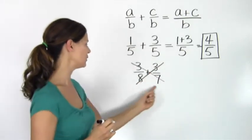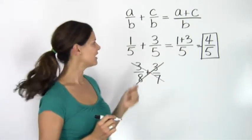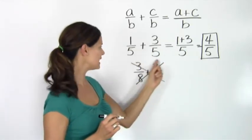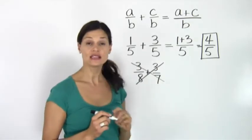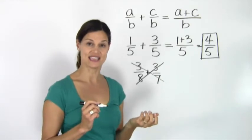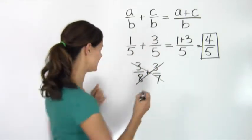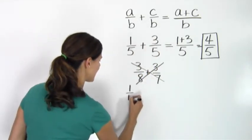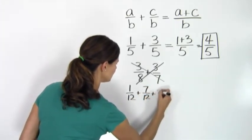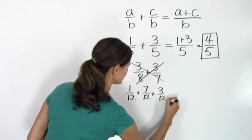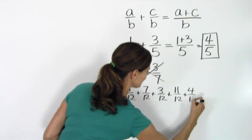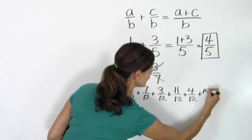So we're not going to look at this one with different denominators right now. We're just going to concentrate on fractions that have the same denominator. There are no limits to the number of fractions that I can add together as long as they have the same denominator using this method. So even, for example, if I had one twelfth plus seven twelfths plus three twelfths plus eleven twelfths plus four twelfths plus fifteen twelfths...